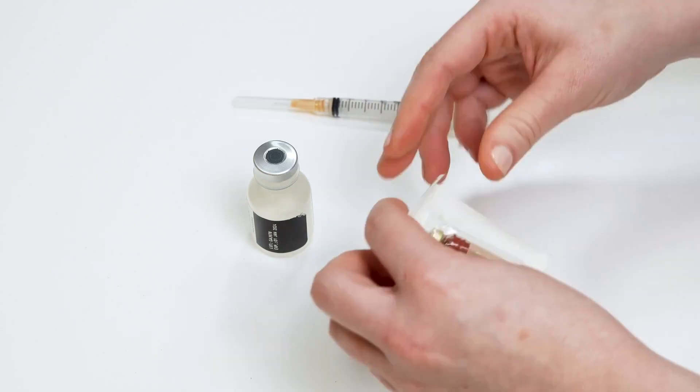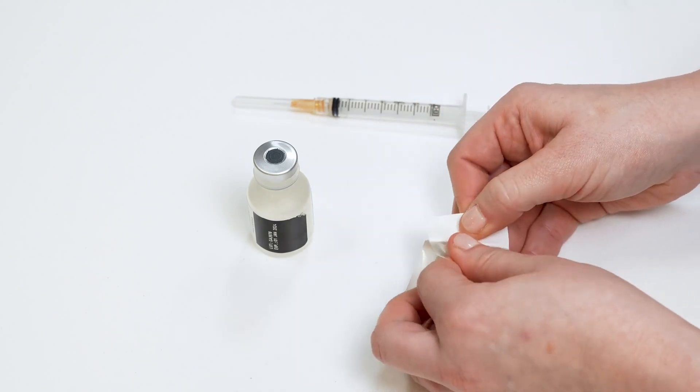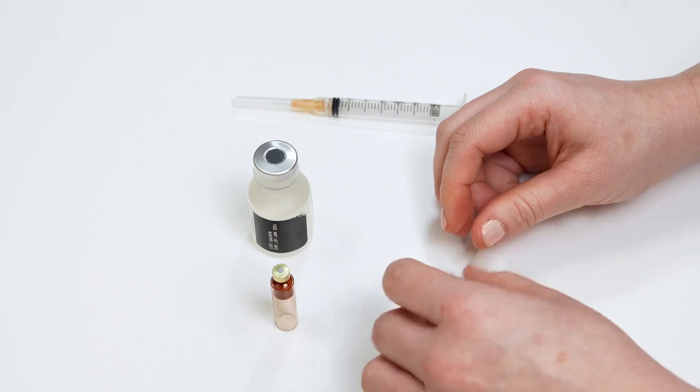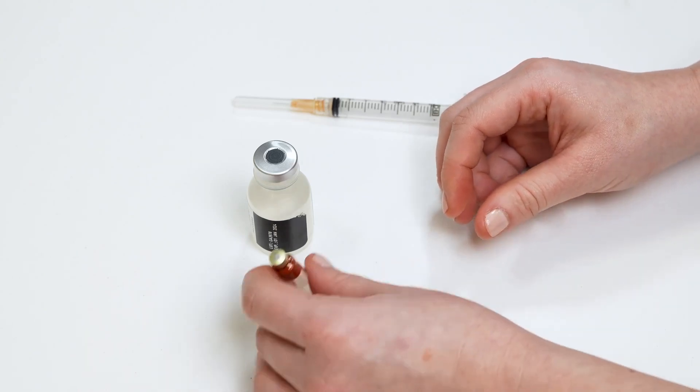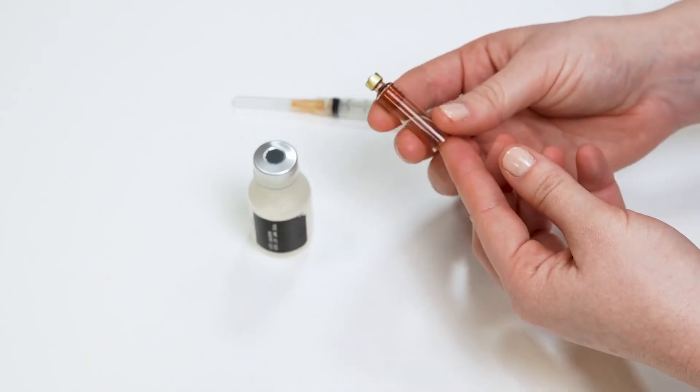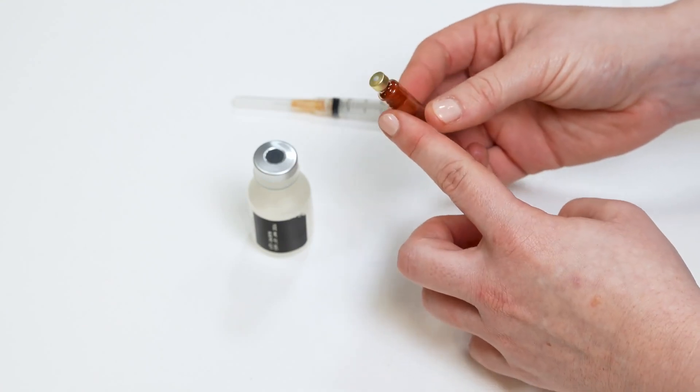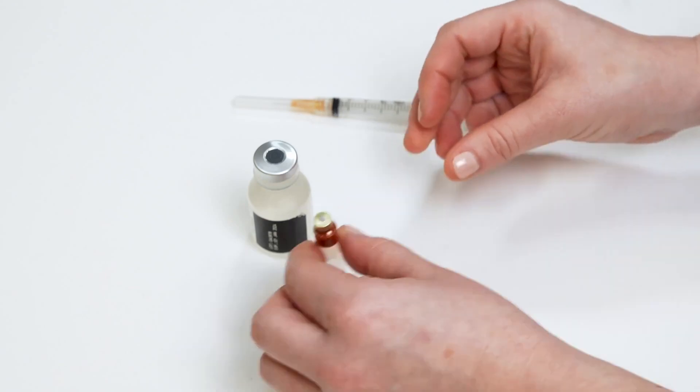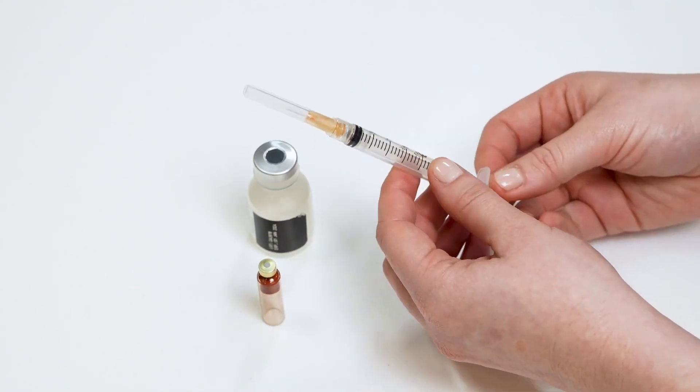Next, open the islet cartridge package and remove the empty islet cartridge from the packaging. Check to see if the red rubber plunger is at the top of the cartridge. If it is not, you can use the syringe and needle to remove air from the cartridge before filling the syringe with insulin.